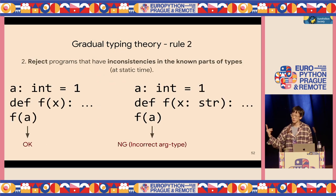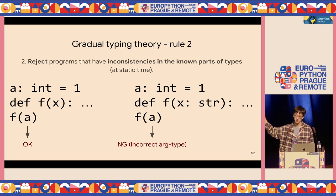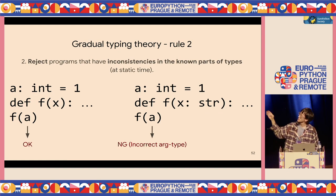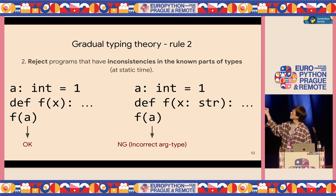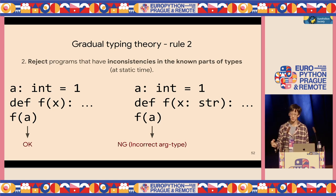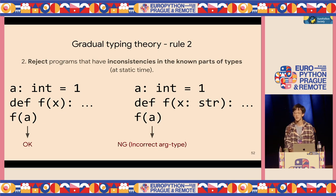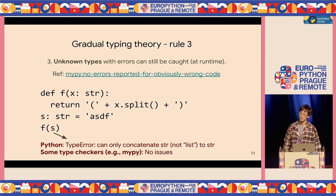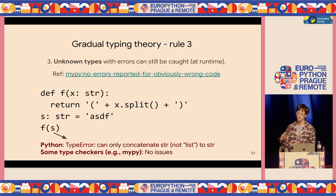Gradual typing theory has two more rules. First, unannotated code is considered annotated with any type everywhere — the system doesn't care, it's okay. Second, if you try to assign a type and put an inconsistent variable, you get an argument type error. The idea is: this system should reject programs with any inconsistency in the known part of types. At runtime, if there are unknown types, your program can still catch them at runtime — just not statically.